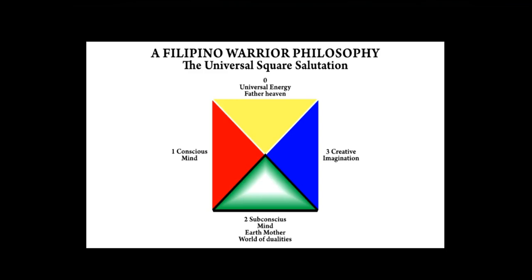The third triangle is the storage files of your mental computer, which keeps your accumulated knowledge. This triangle also represents Earth Mother and life in a world of dualities, as indicated by the numerical two. The computer industry coined a phrase which says: garbage in, garbage out. Your subconscious storage files has no reasoning process, so if you put garbage in, it will give you garbage back. It relies on your conscious mind to tell you what truth is.